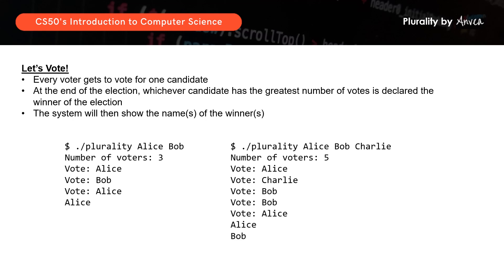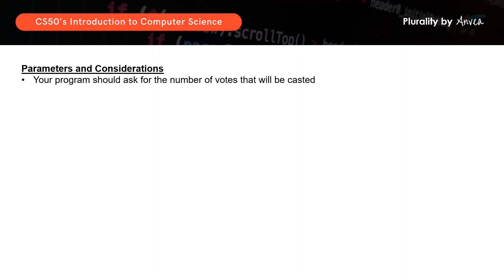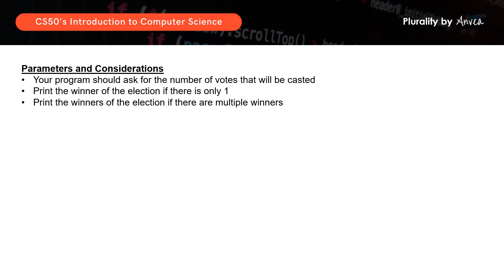So what are the parameters and considerations? The program will need to ask for the number of votes that will be cast. The system will then need to print the winner if there is only one winner, and if there are multiple winners, the system will need to print multiple names.